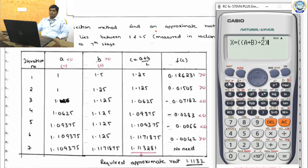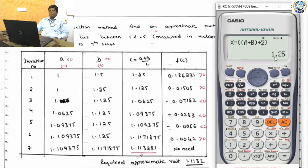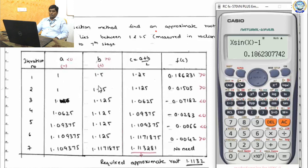Iteration 1: Press Calc, enter a = 1 and b = 1.5. The average c₁ = 1.25. Substituting 1.25 into x·sin(x) − 1 gives approximately +0.18623, which is positive. Since f(c₁) > 0, replace b with c₁.